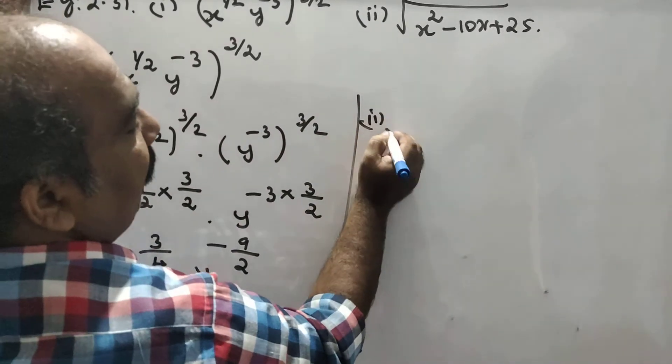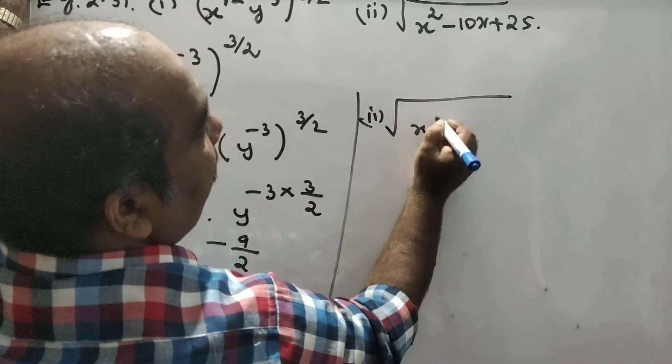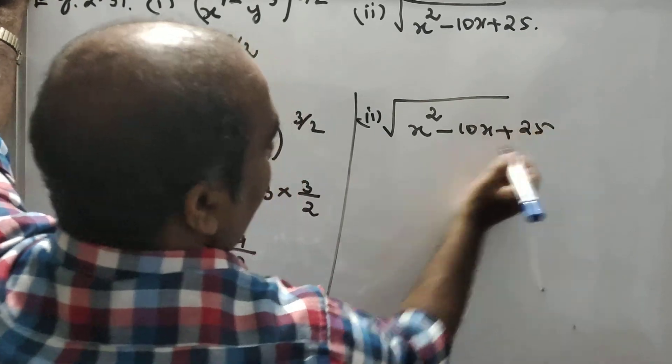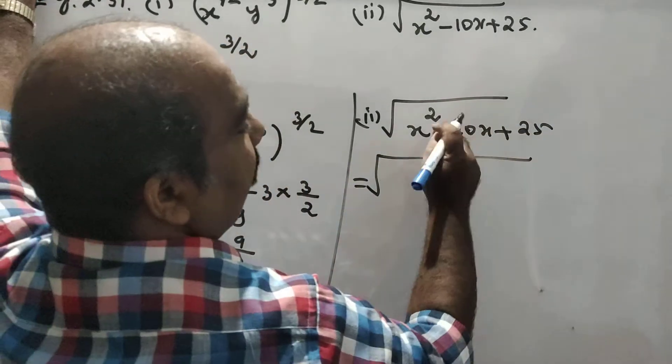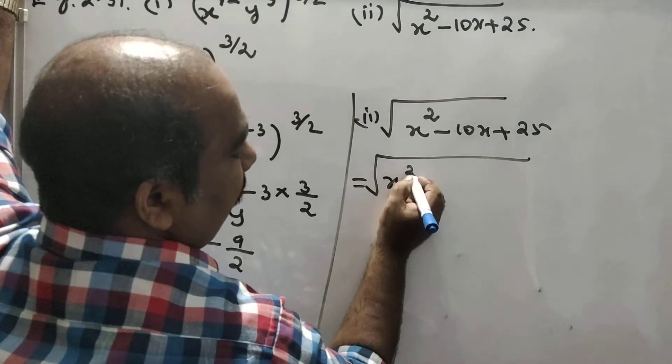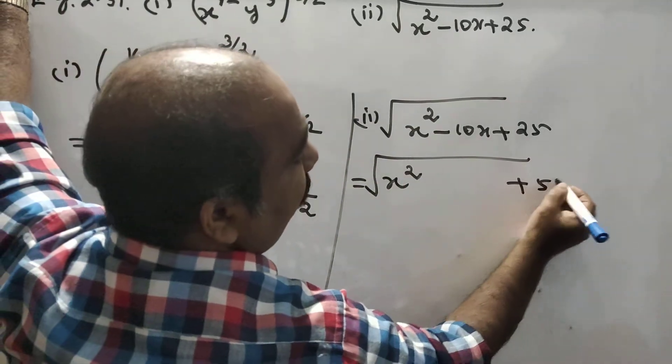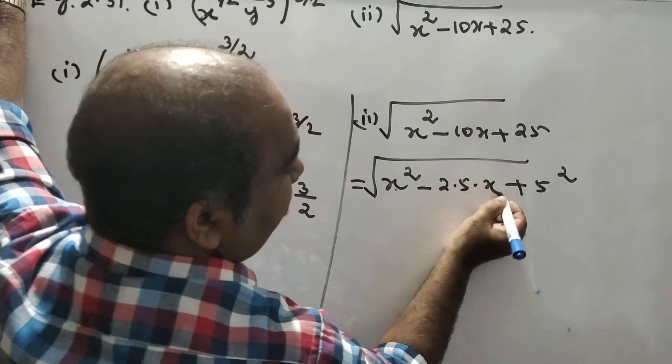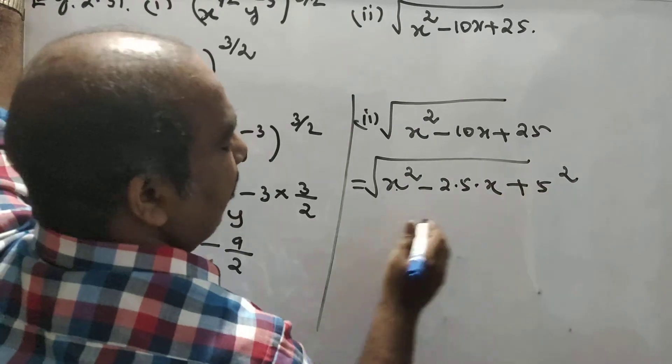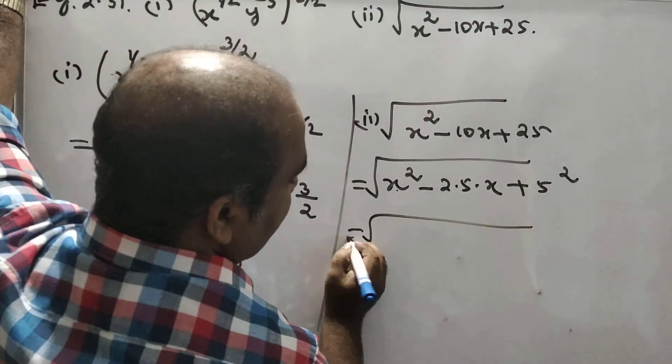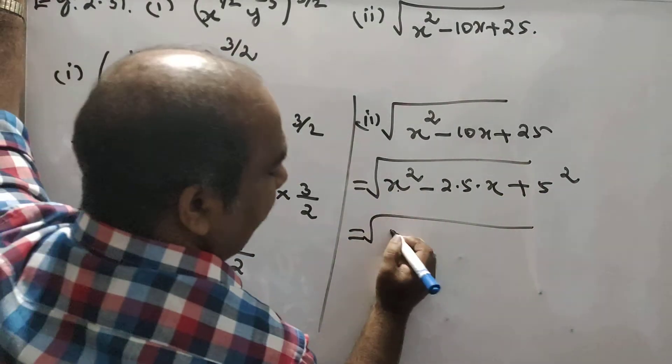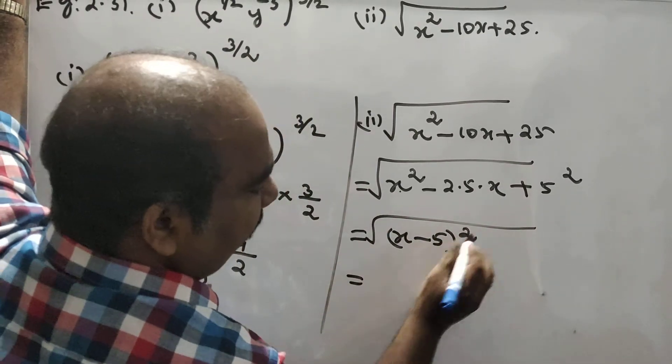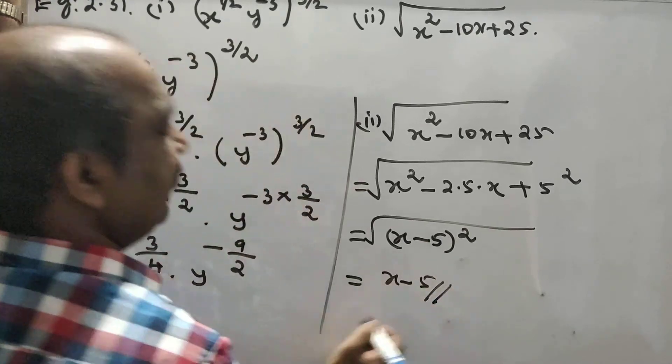Second problem: root of x square minus 10x plus 25. This is x square, and 25 is 5 square. 2 into 5 into x is 10x. Then a square plus b square minus 2ab equals (a minus b) whole square. So a is x, b is 5 whole square. This is root of (x minus 5) squared, that is x minus 5.